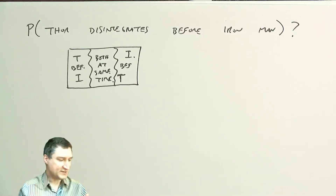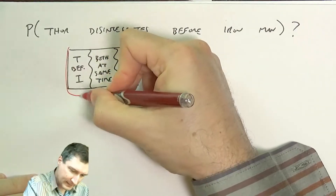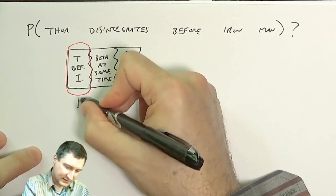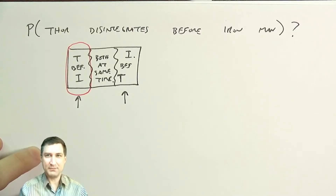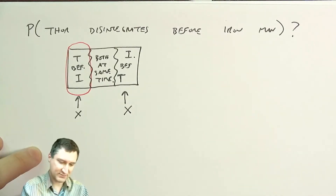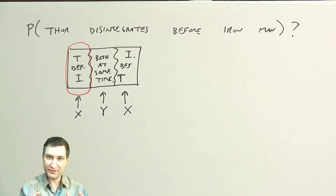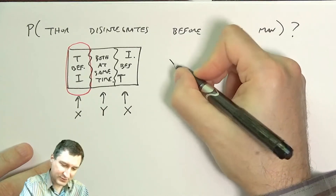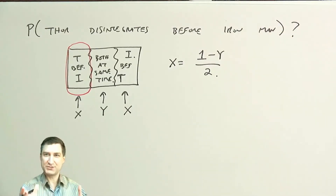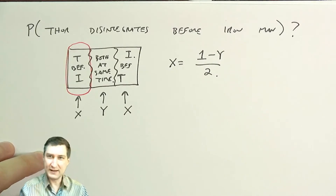One way uses symmetry. The event 'Thor before Iron Man' and the event 'Iron Man before Thor' must have the same probability by symmetry. If we call that probability x, then together they account for 2x. So we can compute y — the probability they both go at the same time — and then x equals (1 − y) / 2. That probability y is a little easier to compute, so let's do that first.